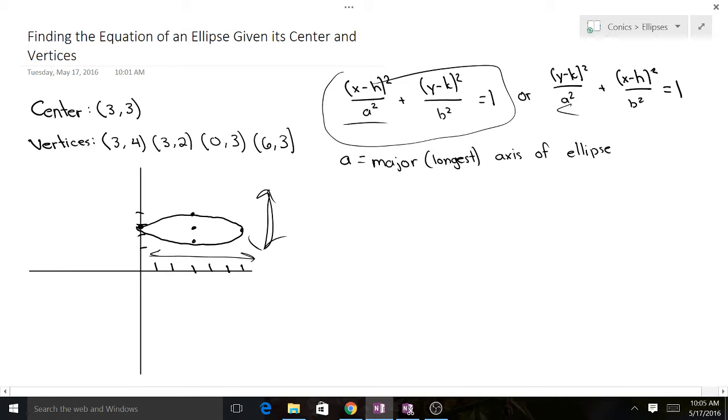So I would then write out here, we've got x minus h squared over a squared plus y minus k squared over b squared equals 1.